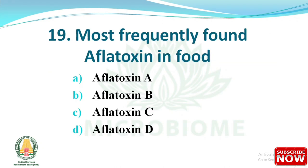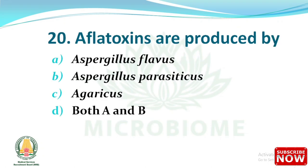Next question: the most frequently found aflatoxin in food is — options: (A) aflatoxin A, (B) aflatoxin B, (C) aflatoxin C, (D) aflatoxin D. The right answer is option A, aflatoxin A. Aflatoxins are produced by Aspergillus flavus and Aspergillus parasiticus — both A and B.